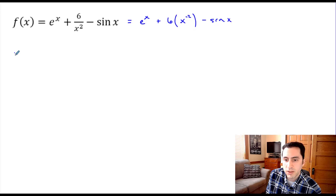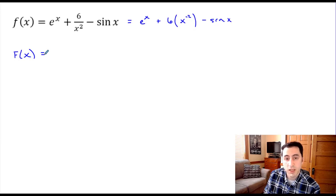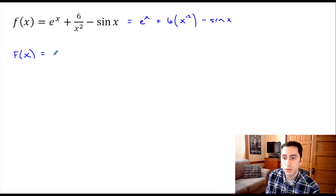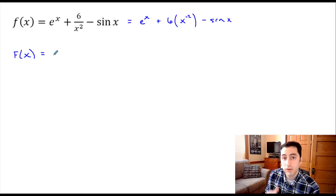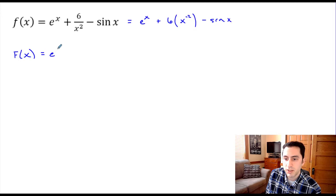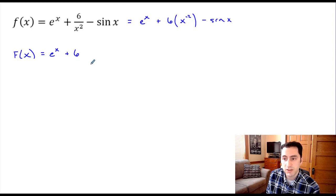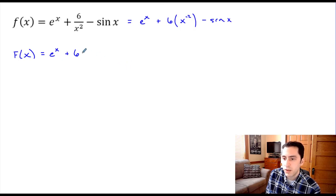Now let's find our antiderivative capital F(x). We're thinking backwards. For the first term, the derivative of e to the x is itself, so it stays the same. For the middle term, using the constant multiple rule, six stays out front and we find the antiderivative of x to the negative two. We add one to the exponent, so negative two plus one gives negative one.